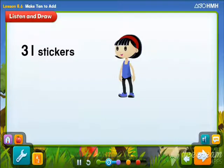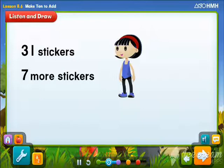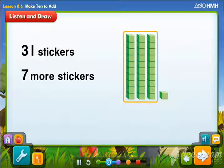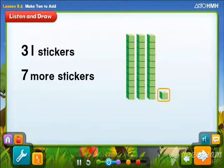Sally has 31 stickers in her sticker book. She gets 7 more stickers. How many stickers does Sally have now? Start by showing 31 stickers. 31 is equal to 3 tens and 1 one.